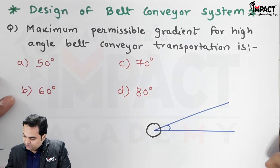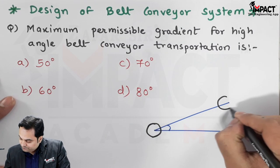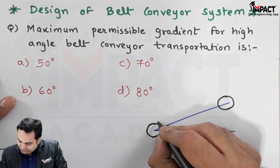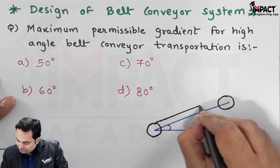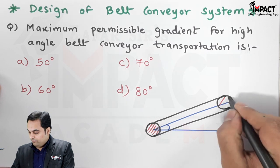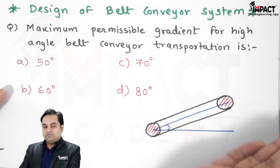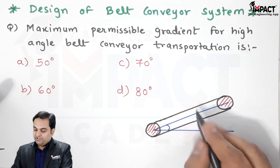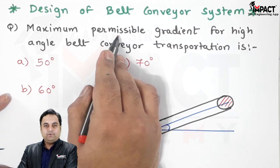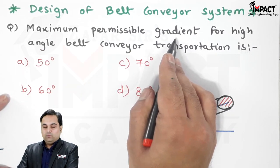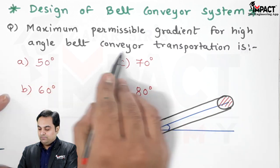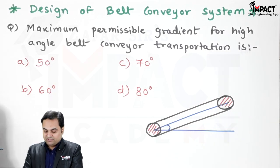And the other pulley on the other side, connected with the help of a belt. For such a construction, how much should be the maximum inclination so that the material cannot fall? The maximum permissible gradient for high angle belt conveyor transportation is 60 degrees.